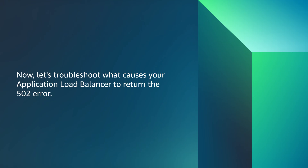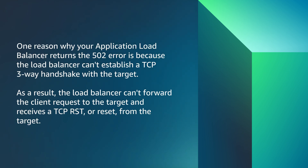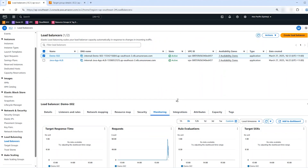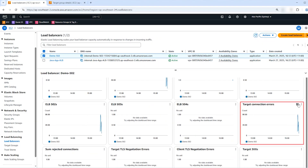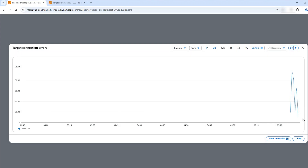Now let's troubleshoot what causes your application load balancer to return the 502 error. One reason is that the load balancer can't establish a TCP three-way handshake with the target. As a result, the load balancer can't forward the client request to the target and receives a TCP RST or reset from the target. To troubleshoot this issue, check the Target Connection Error Count metric to determine the number of connections that the load balancer couldn't establish with the target.